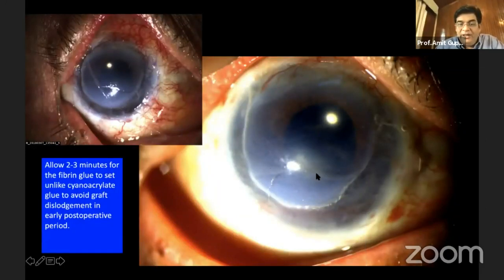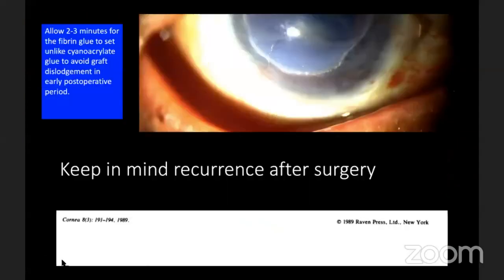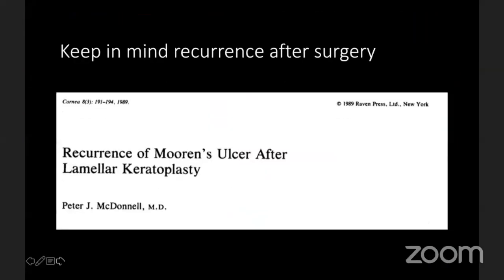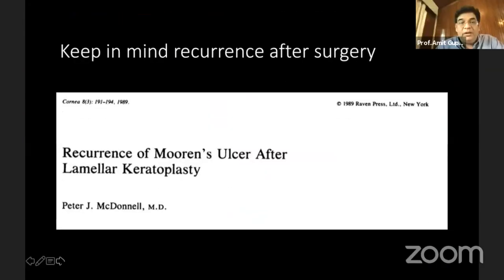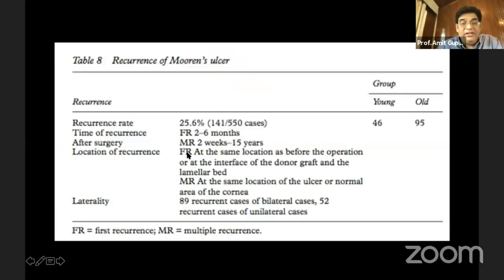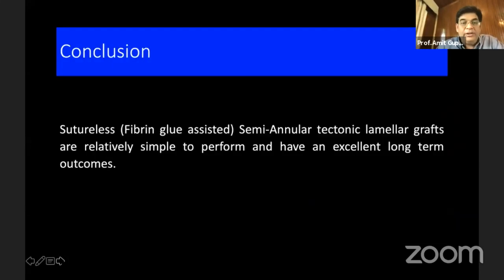With these techniques, you can have very gratifying results in these patients, as these are such challenging scenarios. Keep in mind that many of these patients can recur — there is a reported recurrence rate of as much as 25% when lamellar keratoplasty was carried out for Mooren's ulcer, with a mean time of recurrence between two to six months.